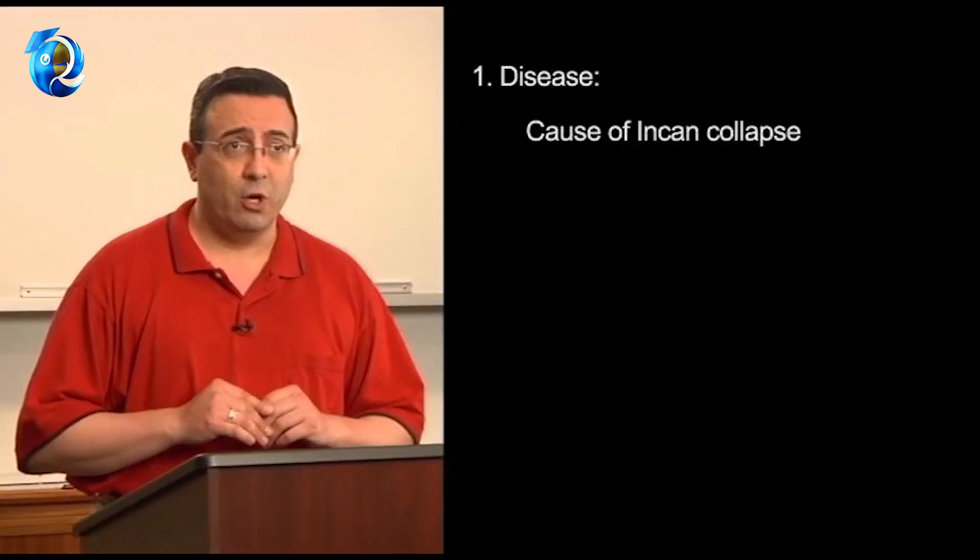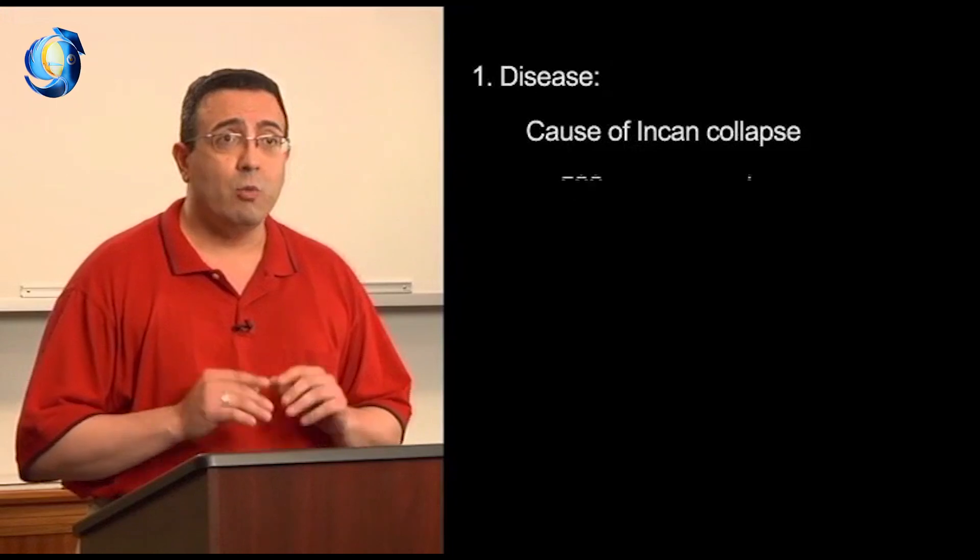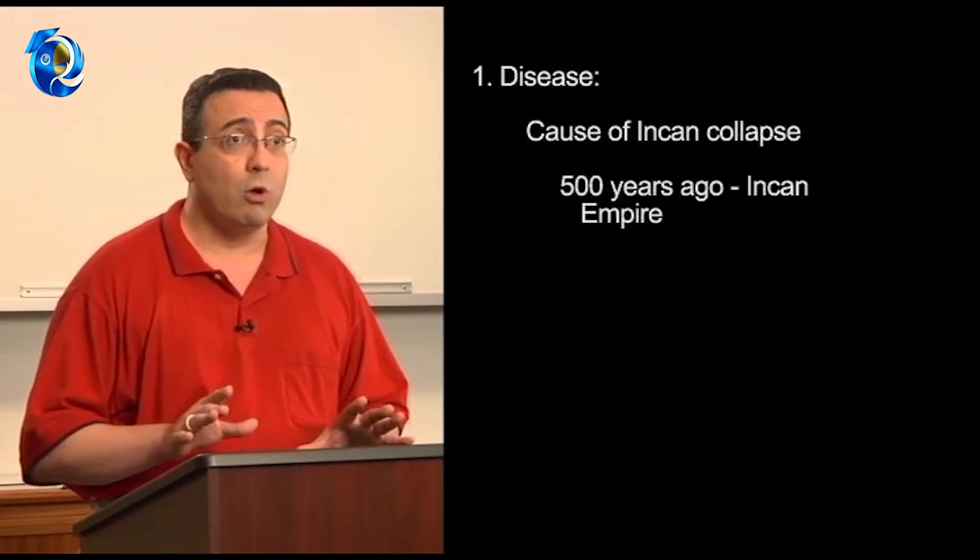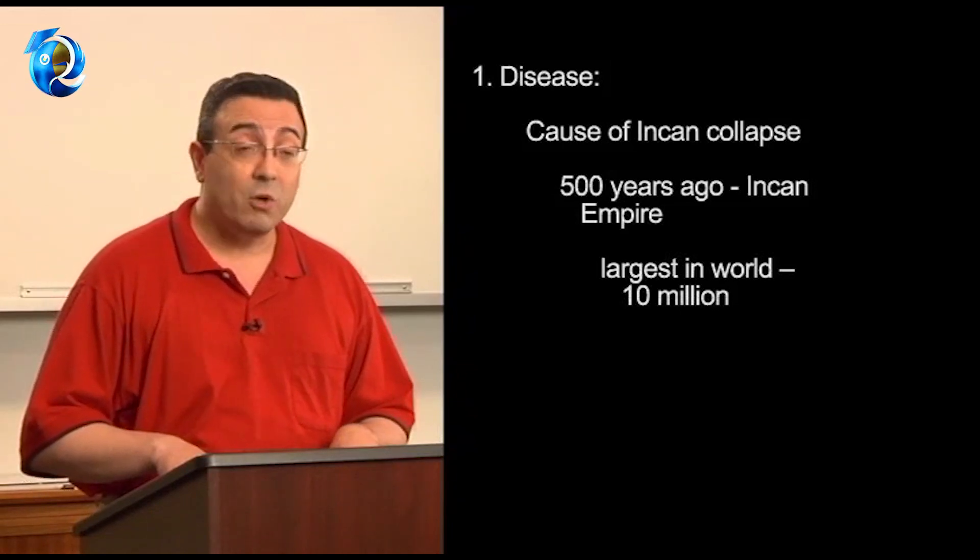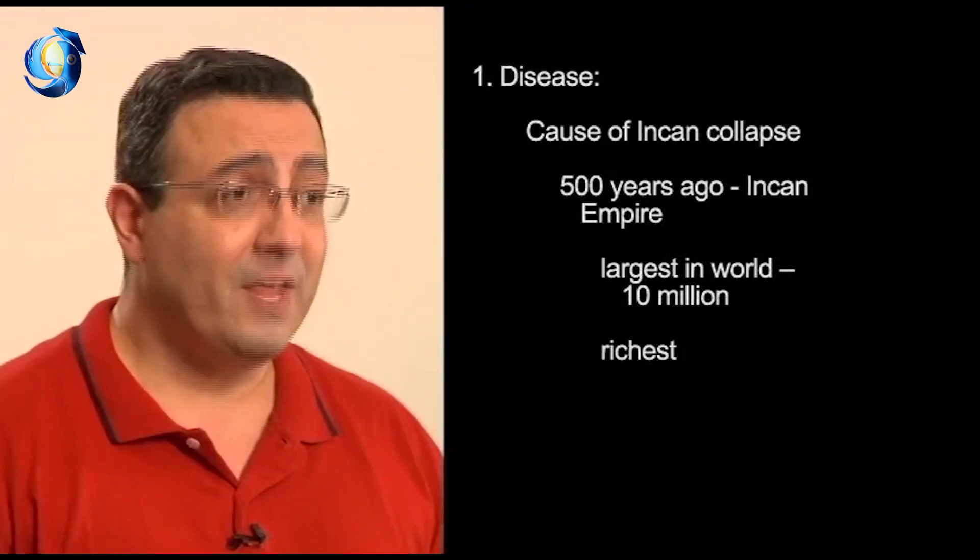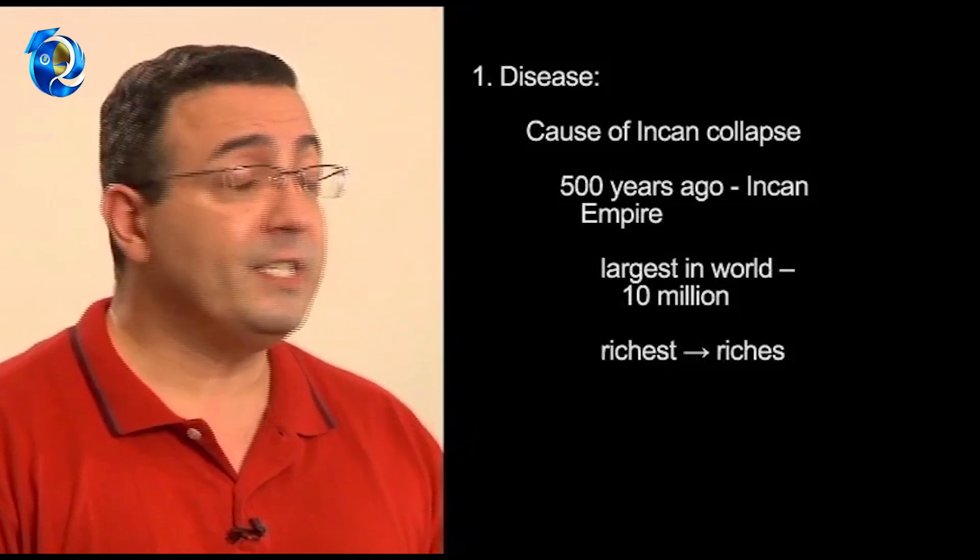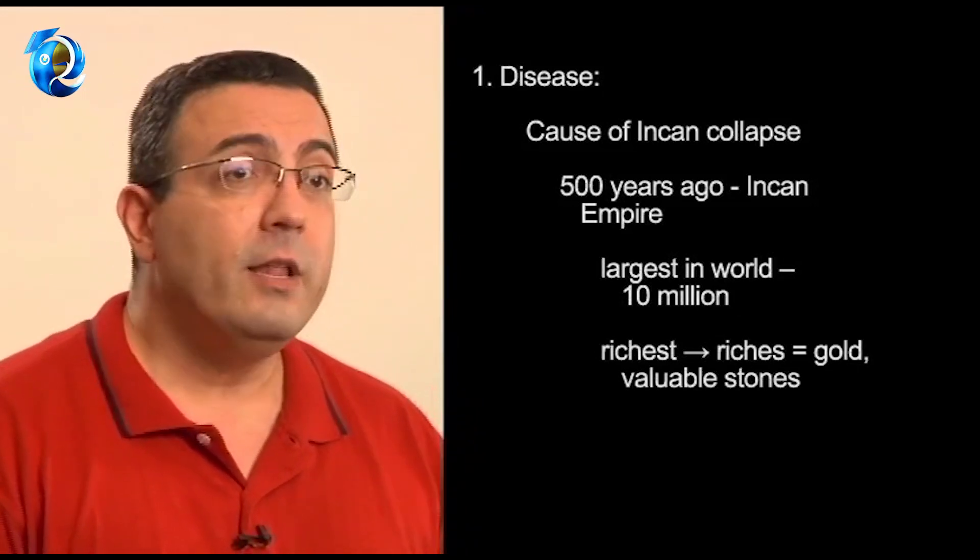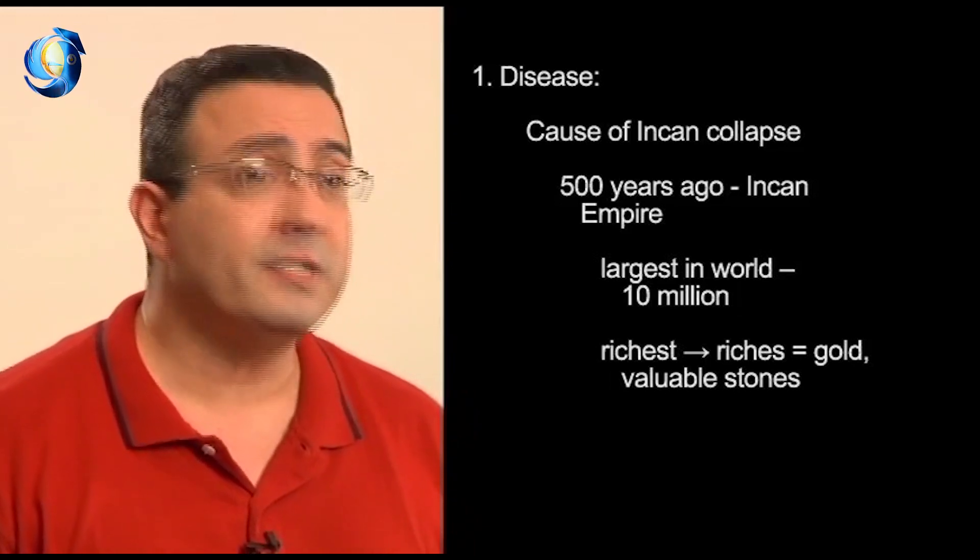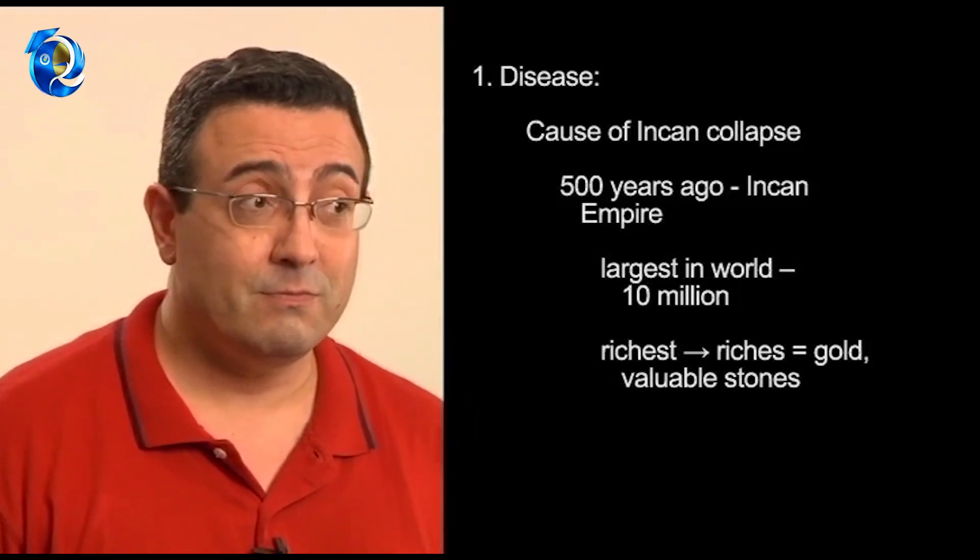Five hundred years ago, the Incan Empire was the largest empire in the world with ten million people. And it was also the richest. And these riches, consisting of gold and valuable stones, for example, led to this great society's disappearance. How?